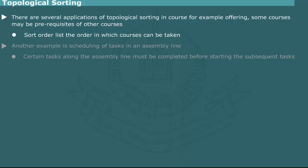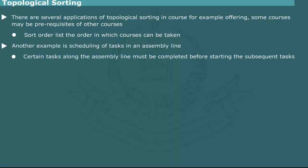Another example of topological order is the scheduling of tasks that must be completed before others can be started, such as in an assembly line.